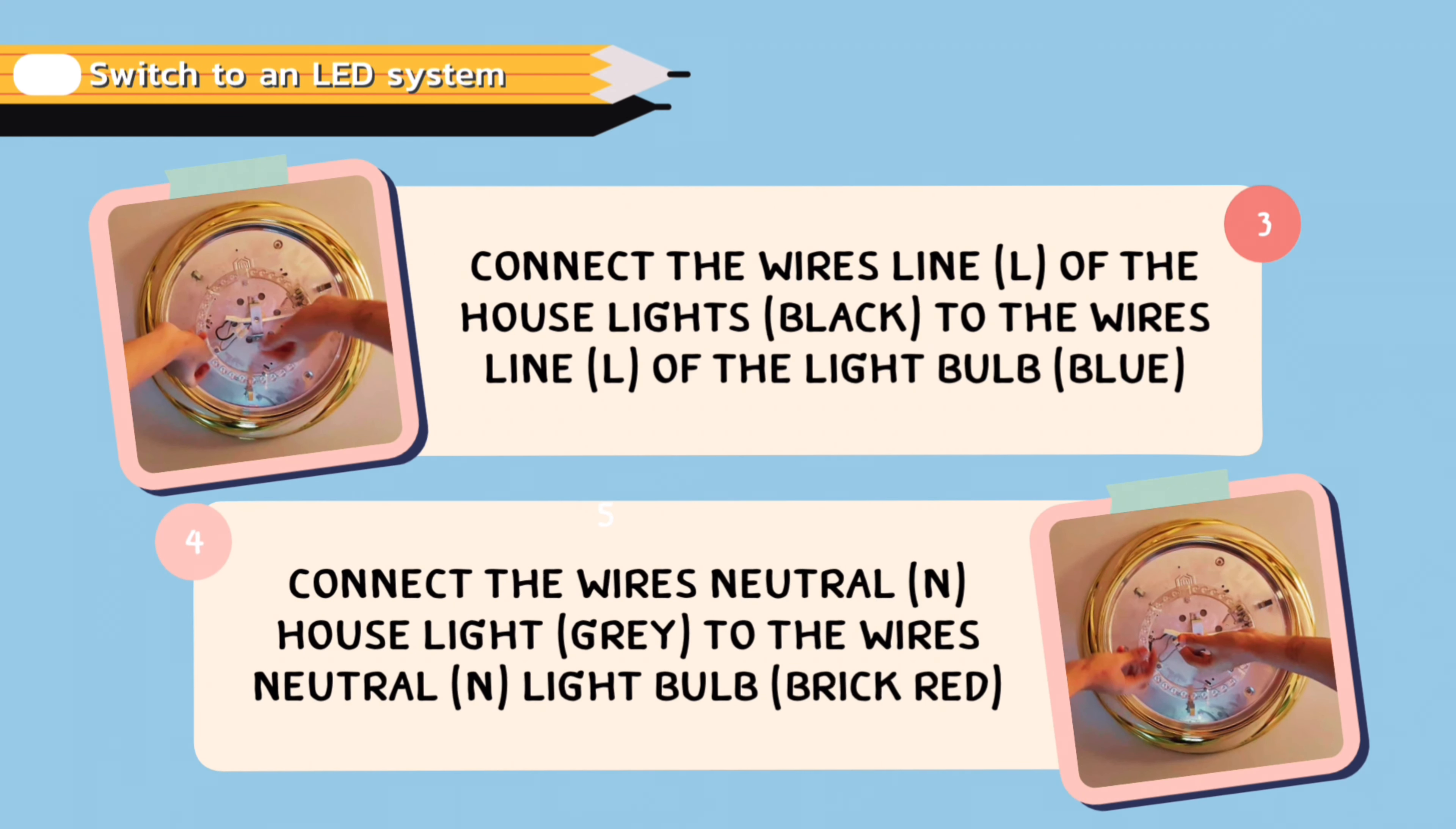Step 3: Connect the wire line of the house lights to the wire line of the light bulb.